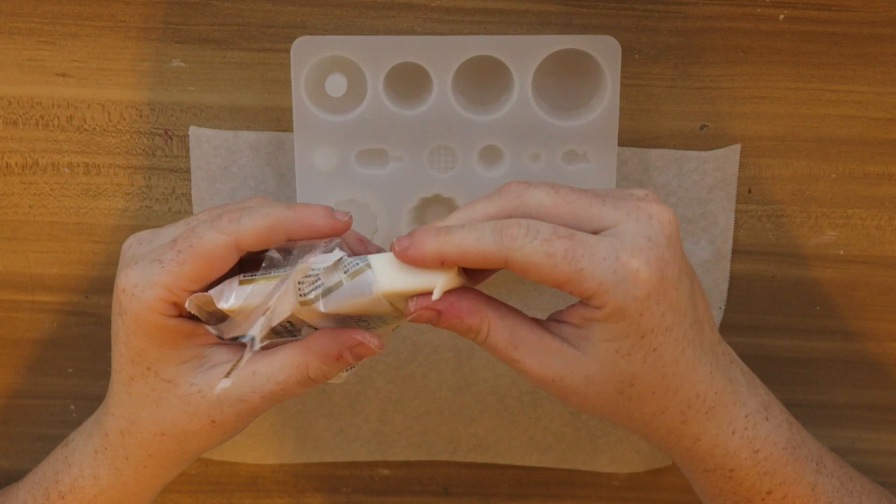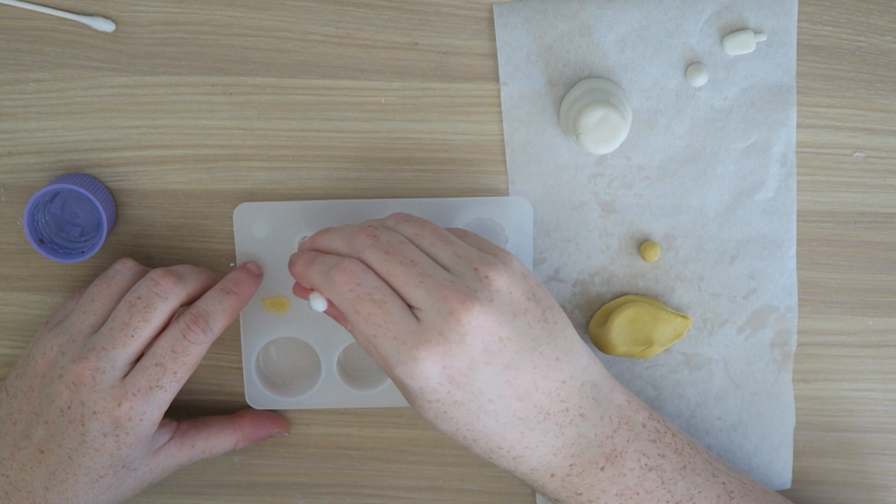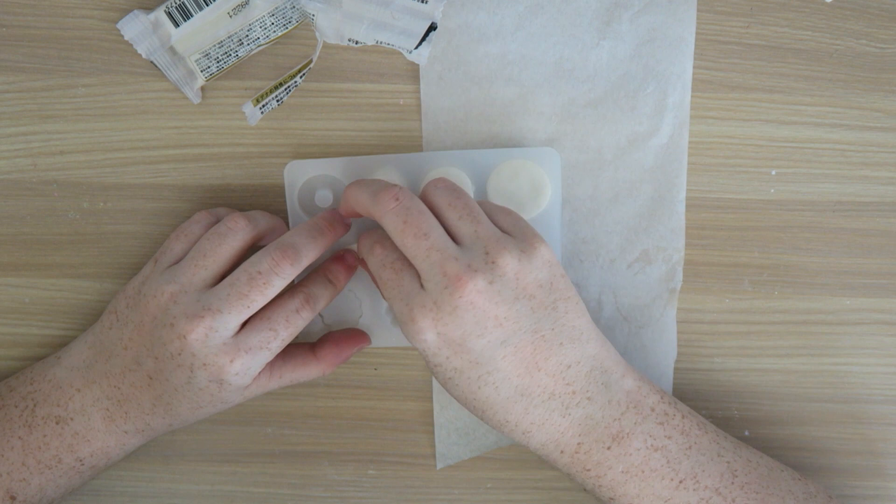So you'll want to knead the clay so that it's easier to work with and so that it'll mold into the different cavities easier. You can use a dab of baby oil in the cavities to make the clay easier to push out. This way you don't have to stretch it and possibly deform the piece in order to get it out.